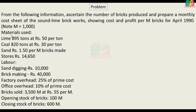Material used: Lime — 895 tons at a cost of 50 rupees per ton. Coal — 820 tons at a cost of 30 rupees per ton. And sand — 1.50 per M bricks made, that is 1.50 per 1000 bricks.